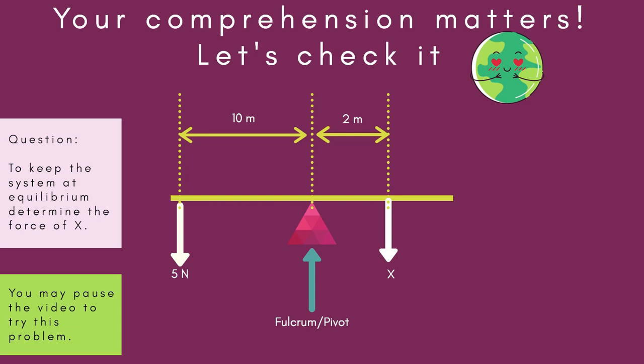Question. To keep the system at equilibrium, determine the force of X. Here you have this setup. You have a pivot. You have a force of 5 Newtons, a distance of 10 meters away from the pivot. And X is 2 meters away from the pivot. You may pause the video to try this problem.